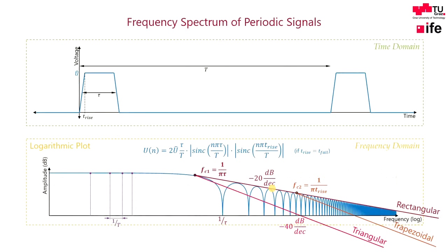This brings me to the final slide. Here I have marked the 40 decibels decrease in amplitude of the triangular function. One could also say that the triangular function contains two corner frequencies at the same frequency point.